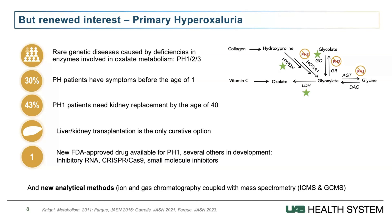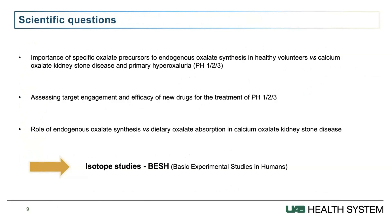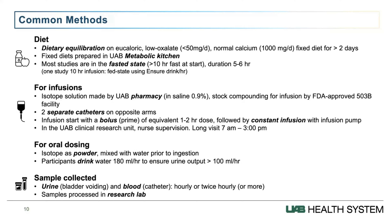Another important driver of our interest is new analytical methods — specifically liquid chromatography and gas chromatography coupled mass spectrometry methods. In our lab we use LCMS, but other labs use GCMS. The key scientific questions we want to answer are: what is the importance of specific precursors to endogenous synthesis in healthy volunteers and patients with PH? Can we assess target engagement and efficacy of new drugs for PH? And what is the role of endogenous synthesis versus dietary absorption in kidney stone disease? Isotope studies in humans — classified as basic experimental studies in humans, or BESH — are very useful for these.